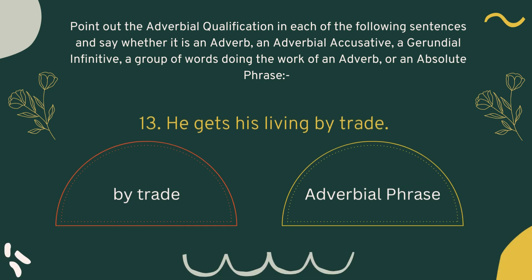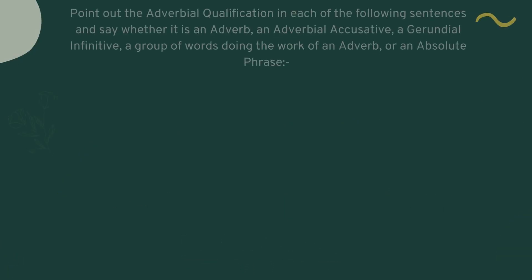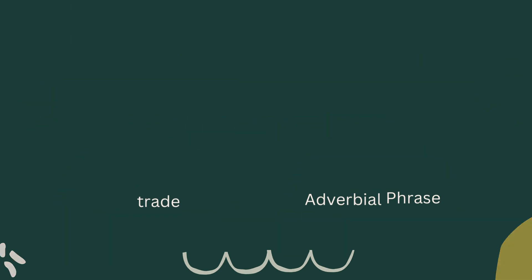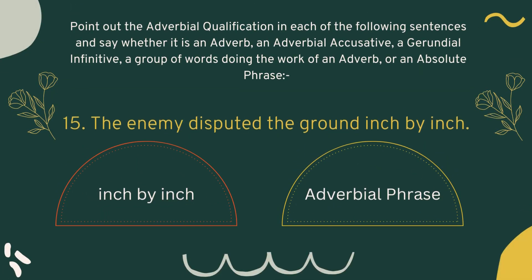Number thirteen: 'He gets his living by trade.' Here 'by trade' is the adverbial qualification and this is an adverbial phrase. Number fourteen: 'He made his money by trade.' We have 'by trade' as the adverbial qualification and this is an adverbial phrase. Number fifteen: 'The enemy disputed the ground inch by inch.' Here the three words 'inch by inch' are the adverbial qualification and this is an adverbial phrase.